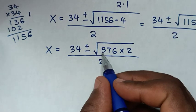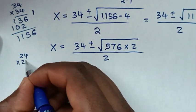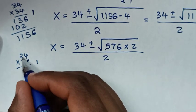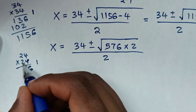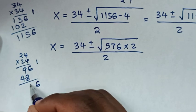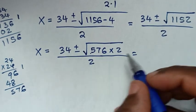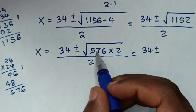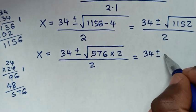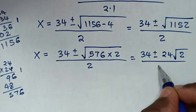Then from here, 576 is the same as 24 times 24. So it will be equal to 34 plus or minus square root of 576, which is 24, times square root of 2, over 2.